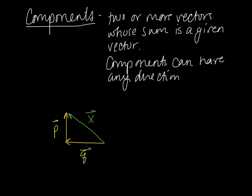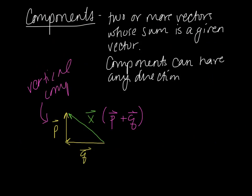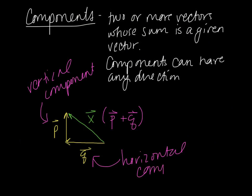Finally, we have what are called components. These are two or more vectors whose sum is a given vector. Components can have any direction. For example, vector X is the resultant of P and Q using the triangle method. Vector P would be called the vertical component of X, and vector Q would be called the horizontal component of vector X. So vector X is made up of horizontal vector Q and vertical vector P — those are its components, and it is the resultant of the two vectors.